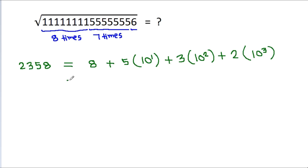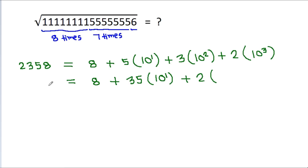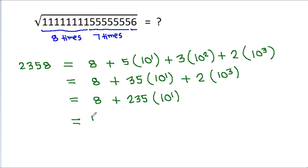Or it can be written as 8 plus 35 times, and the number of digits after 35 is 1, so it will be 10 power 1, plus 2 times, and the number of digits after 2 is 3, so it is 10 power 3. Or it is 8 plus 235, and the number of digits after 235 is 1, so it is 10 power 1. Or it is 58 plus 23, and the number of digits after 23 is 2, so it is 10 power 2, and so on.